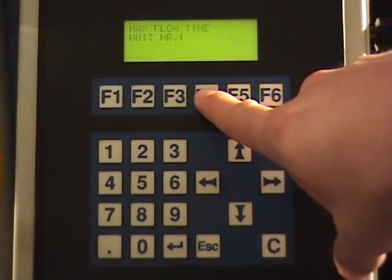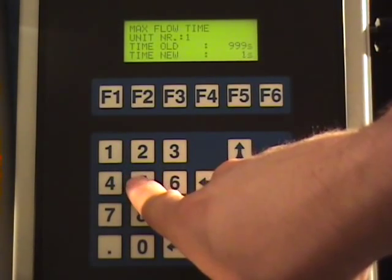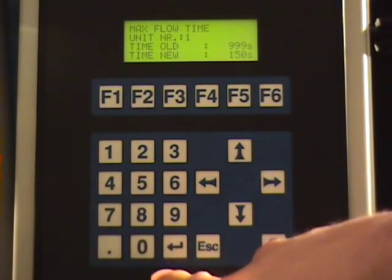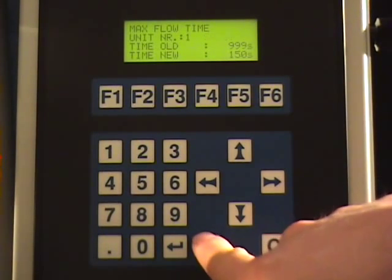Pressing F4 from the parameter menu allows you to set a maximum time for each measurement. Press enter to set this time or escape to leave the setting unchanged.